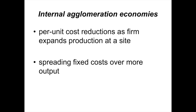An example of internal economies of scale is when per-unit costs go down with an increase in the amount of production happening in the business. This could happen if there is a high fixed cost of production, and it's being spread out over a higher quantity of output.